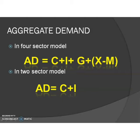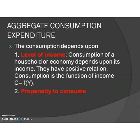But we have taken the two-sector model. In the two-sector model, aggregate demand is equal to consumption expenditure plus investment expenditure. Let us study more about this component of aggregate demand.